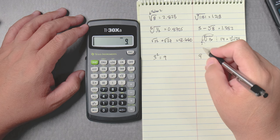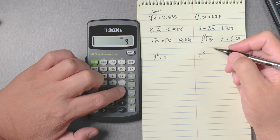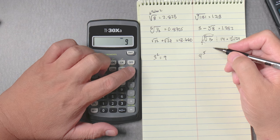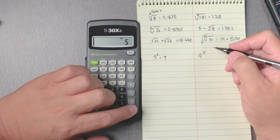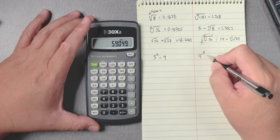9 to the fifth power, so we put 9 y to the x 5 equals and that gives you 59,049.